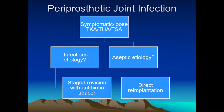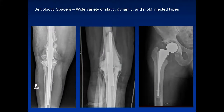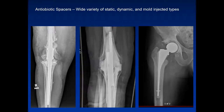Looking at this in another way through an algorithm of why surgeons need to know our frozen section findings: antibiotic spacers are orthopedic implants used to deliver antibiotic therapy locally. There are static types where the limb becomes fixed, mobile or dynamic ones, and mold-injected types. This is one of the reasons why orthopedic surgeons want your opinion both at frozen section and on permanent sections.